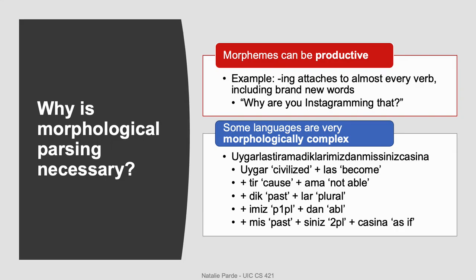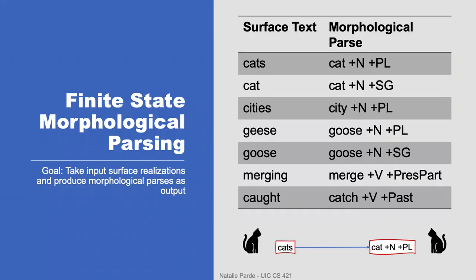Morphological parsing can also be really useful for handling morphologically complex languages like Tagalog, Ojibwe, or Turkish. There's apparently a Turkish word that I'm showing on this slide but do not know how to pronounce, and it can be broken down into all of the constituent morphemes listed here. I looked it up and it means 'behaving as if you are among those whom we could not civilize.' So with a word like this, it'd be really convenient to have a high quality morphological parser rather than attempting to just tackle it all in one block.